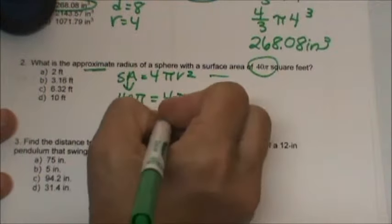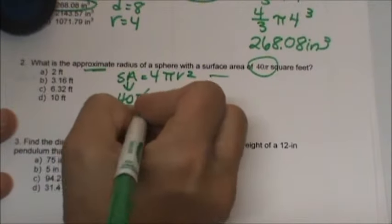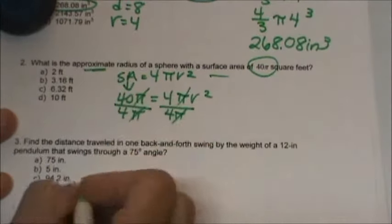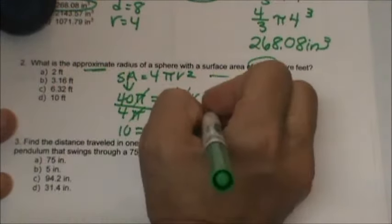To algebraically solve this we are going to divide by 4 pi on both sides. Well isn't that handy? The pi is cancelled and I am just left with 10 equals r squared.